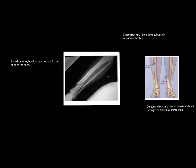Now let's look at some different kinds of fractures. There's no difference between a fracture and a break — they're the same thing. A bone fracture, break, or crack occurs in part or all of the bone. The image here shows someone who has broken their tibia and fibula — quite a nasty injury. A simple fracture is where the bone breaks but the skin remains unbroken, as has happened here with the tibia.